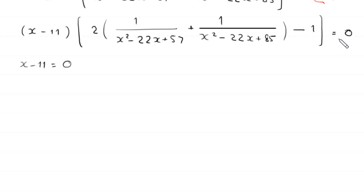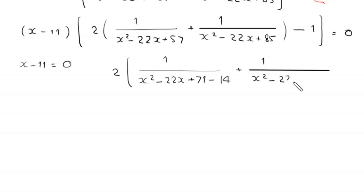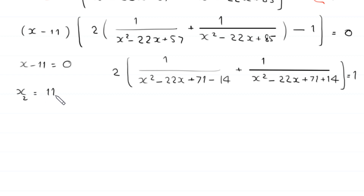We move negative 1 to the right hand side, giving 2 times [1 divided by (x squared minus 22x plus 57) plus 1 divided by (x squared minus 22x plus 85)] is equal to 1. From the equation x minus 11 equals 0 we get the second solution: x₂ is equal to 11. So far we have two solutions: x equals 0 and x equals 11.